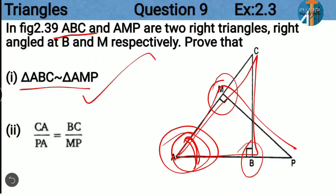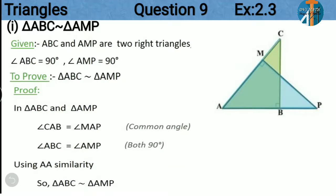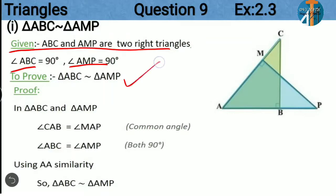By AA similarity you can prove this — I'm just giving a hint. Then you know that if any two triangles are similar, their corresponding sides are in the same ratio. Let's start now. The given is: angle ABC and angle AMP are two right triangles, that means angle B and angle M are equal to 90 degrees. To prove: triangle ABC is similar to triangle AMP.